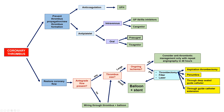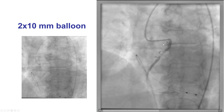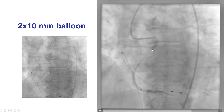The next management is standard for thrombotic lesions: aggressive antithrombotic and antiplatelet therapy. Here the patient received heparin as well as ticagrelor. Then restoring coronary flow — first wiring and ballooning with a small balloon, and then determining if there's a large thrombus that would require thrombectomy before performing stenting. After a small 2.0 balloon was used, there was restoration of antegrade flow into the right coronary artery.